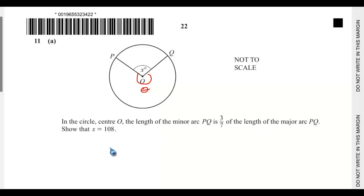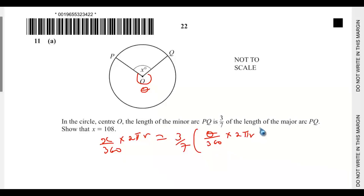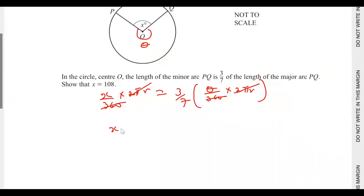The length of the minor arc would be x over 360 times 2πr, and this is equal to 3/7 of the length of the major arc. The major arc would be theta over 360 times 2πr. From here, 360 cancels 360, and 2πr cancels 2πr. So we are left with x equals 3/7 times theta.